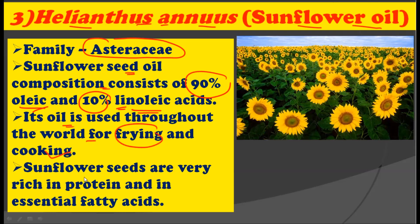Sunflower seeds are very rich in protein and essential fatty acids. So the third plant is Helianthus annuus, commonly called sunflower, belonging to the family Asteraceae. The sunflower seeds contain 90% oleic acid and 10% linoleic acid. This oil is used for frying and cooking purposes, and the seeds are very rich in protein and essential fatty acids. This is the third plant whose oil is consumed throughout the world for cooking.